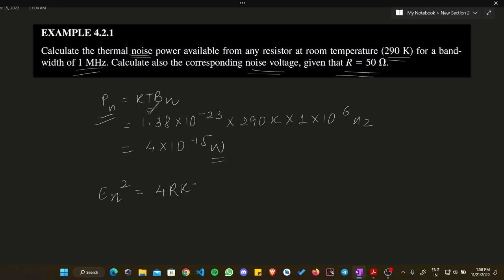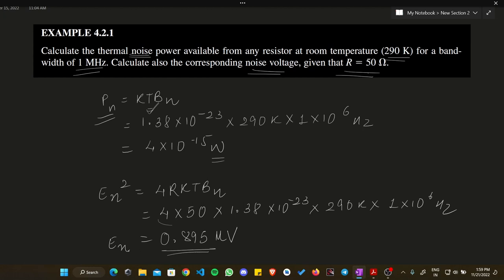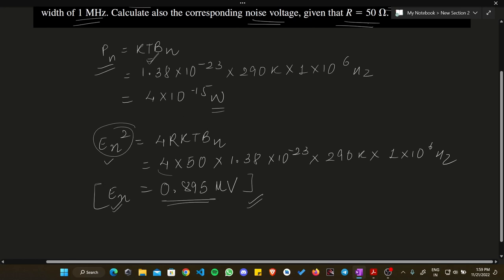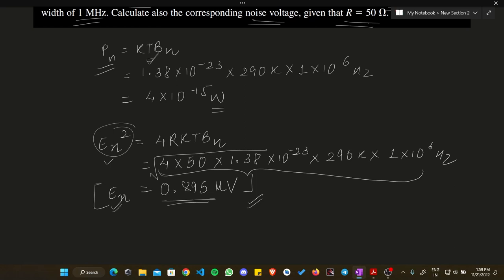Now let's calculate En using En² = 4RkTBn. R = 50 ohm, k = 1.38 × 10⁻²³, T = 290 Kelvin, Bn = 1 × 10⁶ Hz. Solving this gives En² and taking the square root gives the final answer: En = 0.895 microvolt. Make sure to take the square root since we need En, not En².